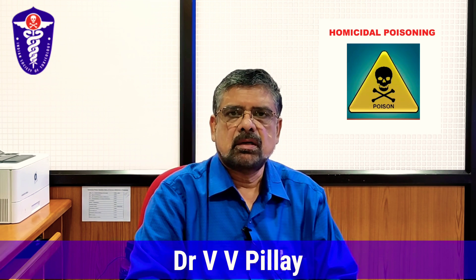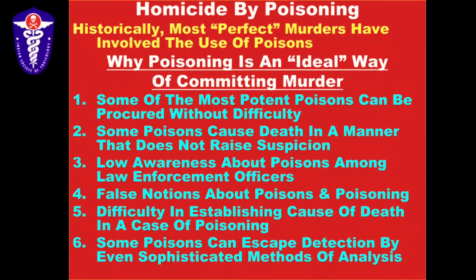The reasons why poisoning is considered an ideal way of committing murder: some of the most potent poisons can be procured without difficulty; some poisons cause death in a manner that does not raise suspicion; there is low awareness about poisons among law enforcement officers and even among doctors; false notions about poisons and poisoning; difficulty in establishing cause of death in a case of poisoning; and some poisons can escape detection even by sophisticated methods of analysis. All these factors make poisoning a method that is not easy to detect.